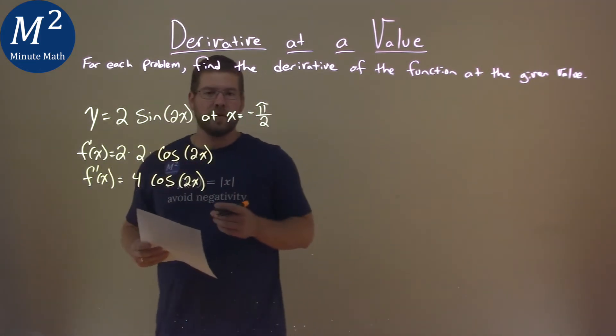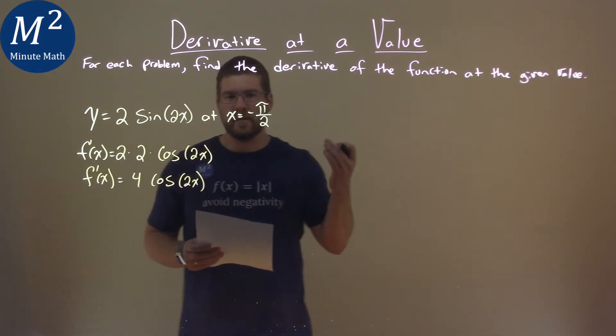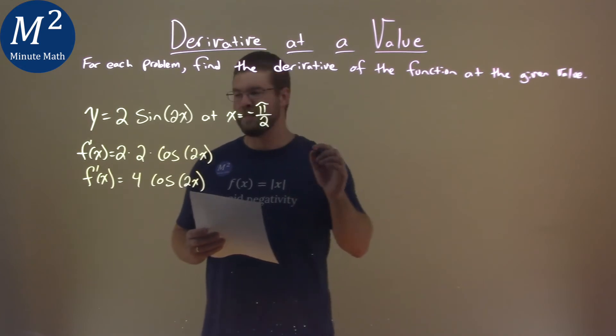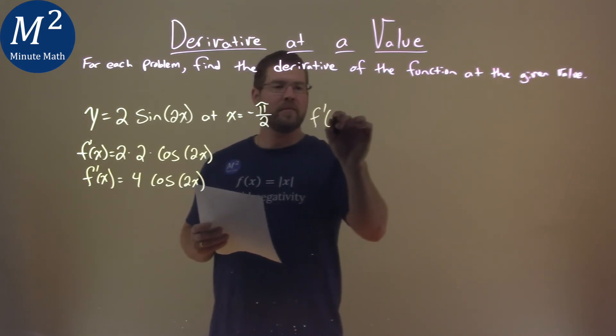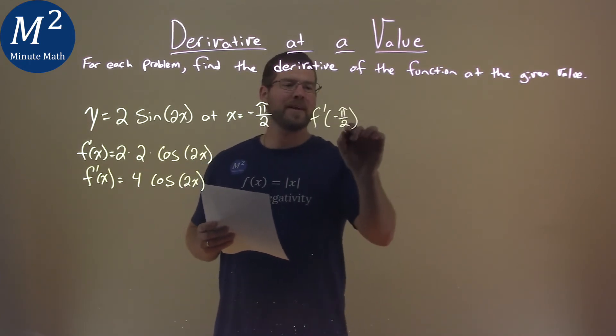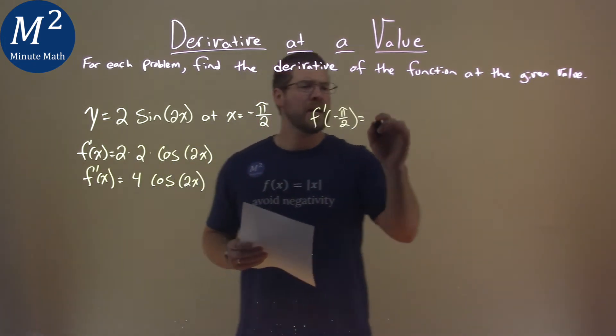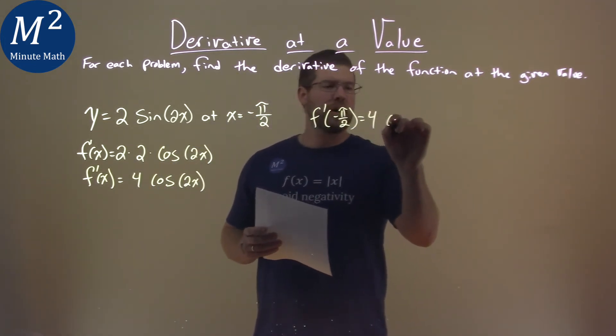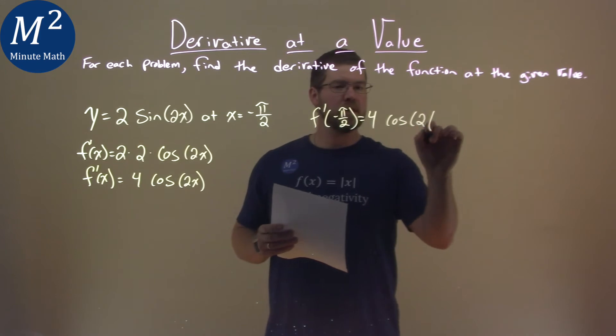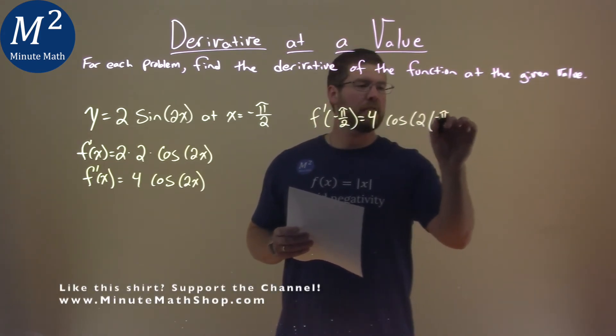So now we have our derivative, let's go plug in our value at negative pi over 2. So we have f prime of negative pi over 2, and make sure you plug it into f prime guys, 4 cosine of 2 times our x value negative pi over 2.